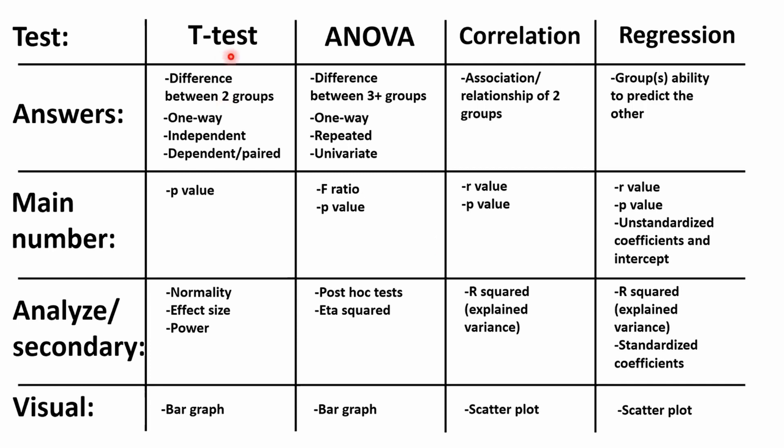Very briefly, just having a basic understanding of what these tests mean, when you would use them, what they answer, the main numbers you're going to be looking for, how to evaluate if it was a good test, and how to visualize it — that gives you a pretty good foundation on the four main types of tests and how to evaluate them. Questions to ask yourself when reading the results section are: Did they pick the right test, and are they reporting the numbers correctly based on the tests? That ties into the discussion and conclusion, which is for the next video. Please subscribe if you want to stay up to date, like the video if you enjoyed it, and comment below for feedback on what you want to see next.